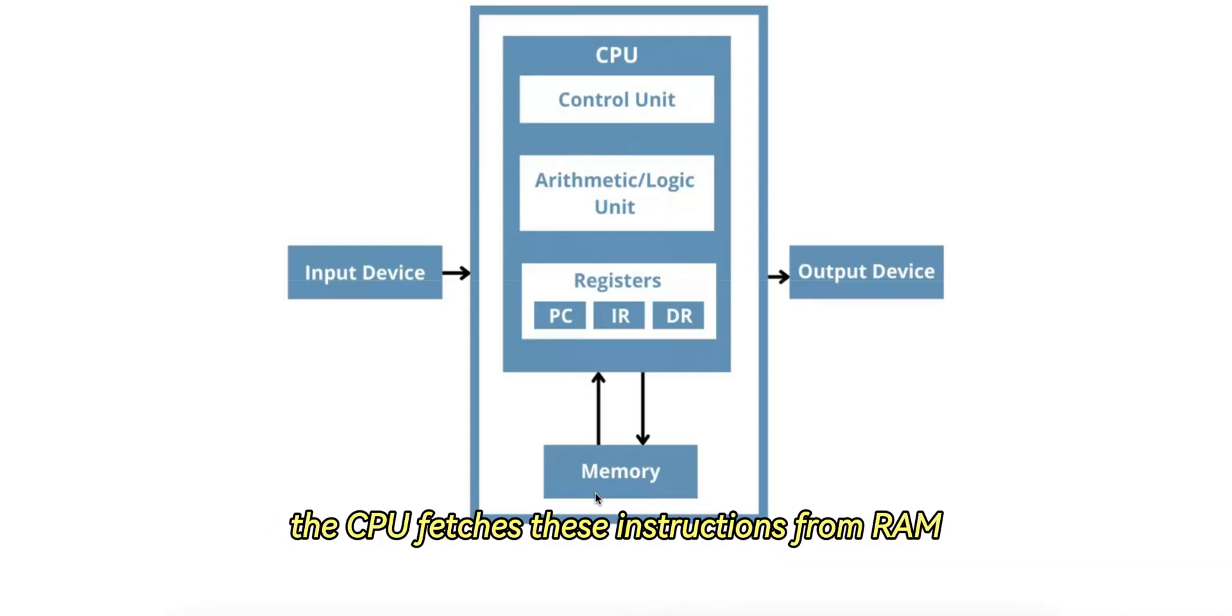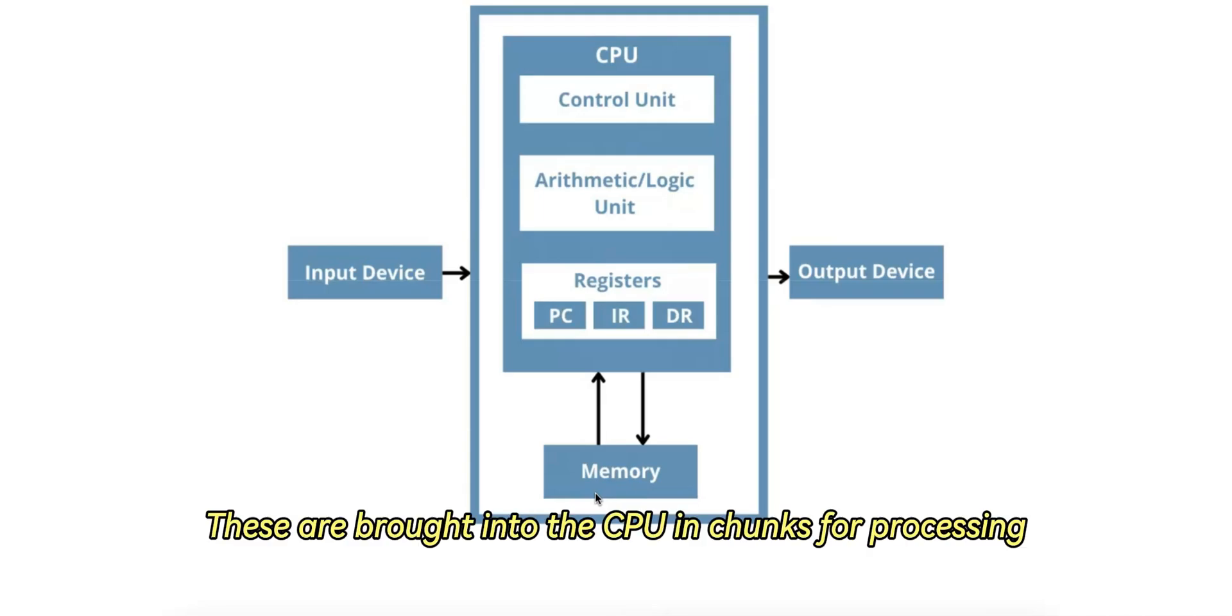Programs stored on the hard drive are loaded into RAM for execution. The CPU fetches these instructions from RAM and executes them. While registers handle small, immediate data, larger datasets, for example arrays or matrices, are stored in RAM. These are brought into the CPU in chunks for processing.